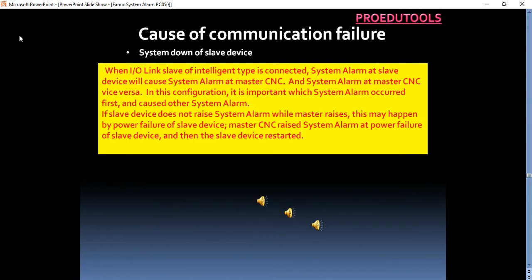System down of slave device. When IO link slave of intelligent type is connected, system alarm at slave device will cause system alarm at master CNC, and system alarm at master CNC vice versa. In this configuration, it is important which system alarm occurred first and caused other system alarm. If slave device does not raise system alarm while master raises, this may happen by power failure of slave device. Master CNC raised system alarm at power failure of slave device, and then the slave device restarted.